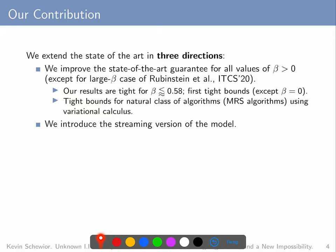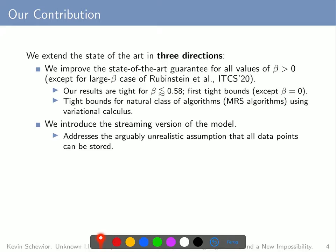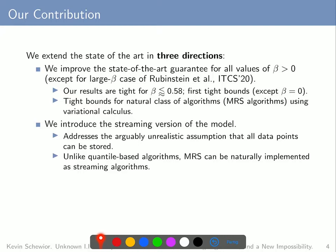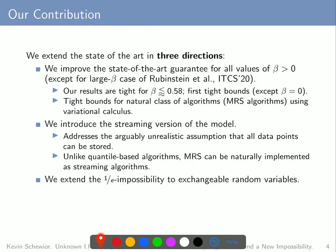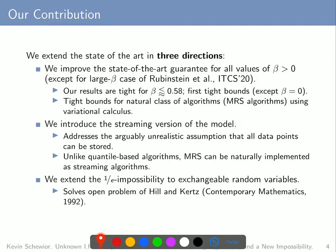In addition, we get tight bounds within a natural class of algorithms called MRS algorithms, which I will define in a minute, and we obtain these tight bounds using variational calculus. As a second contribution, we introduce the streaming version of the model, which addresses the arguably unrealistic assumption that all samples can be stored even if there are a vast number. MRS algorithms can naturally be implemented as streaming algorithms in our model. As a third contribution, we extend the 1/e impossibility to exchangeable random variables, solving a problem of Hill and Kerz from the 1990s. The proof uses Ramsey-theoretic techniques from the EC19 paper but requires significantly more effort, including an application of Kuhn's theorem.